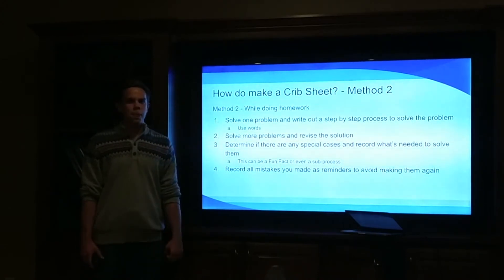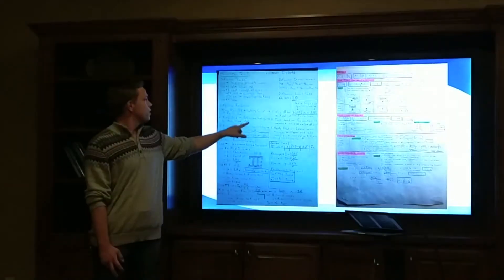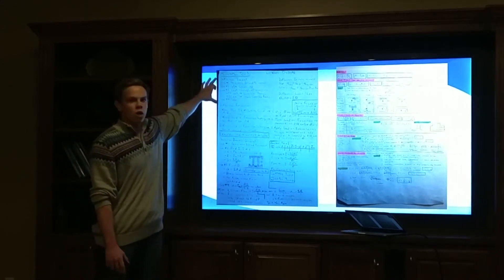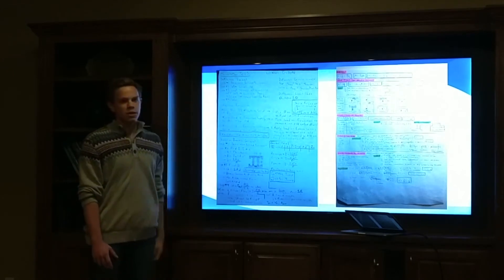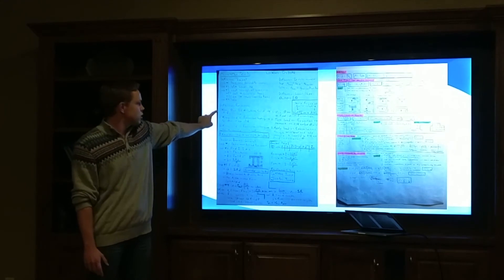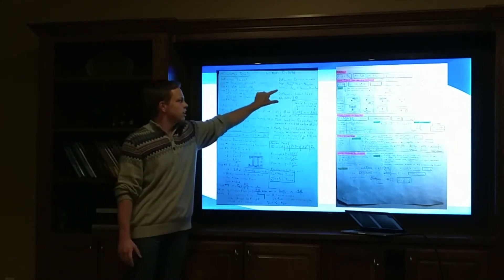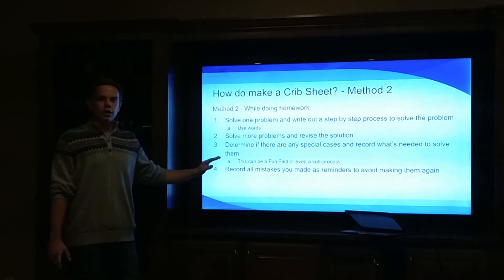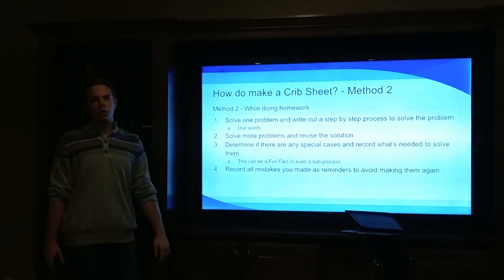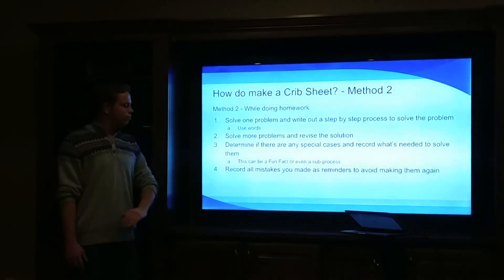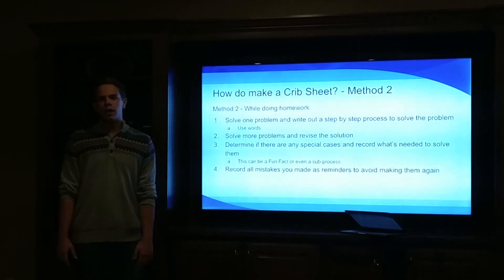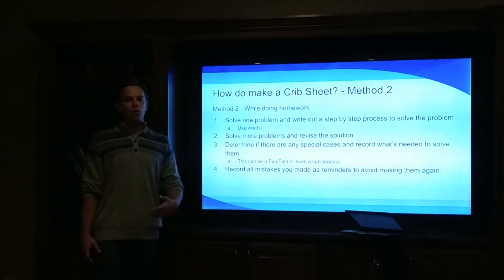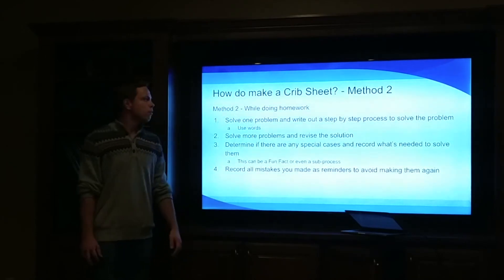You'll end up having to put in fun facts and sub-processes — a quick description of how to handle a special case. For example, this entire half of my crib sheet is based on deflection for a test. I have my general process to solve it, and then a bunch of small subsections for special cases — one is an entirely different sub-process with steps one, two, three, and another is just a small fun fact. It's really critical that you write out all those sub-processes and steps in words. Also, while solving the homework, write down any mistakes you make — since you're taking it seriously you'll record mistakes better and make better reminders.